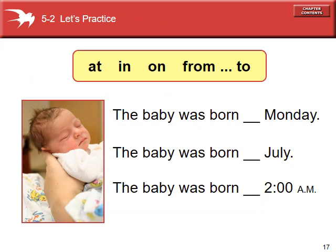When choosing prepositions, focus on the word that comes after the blank. In the first one, the word after the space is Monday — Monday is a specific day, so this is going to be "on". The second one, July comes after — July is a month, made up of many days, so it's going to be "in". The last one has 2 a.m., which is a specific time on the clock — so this one is going to be "at".